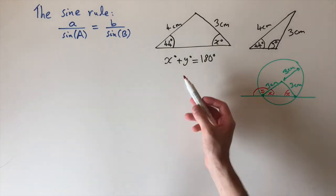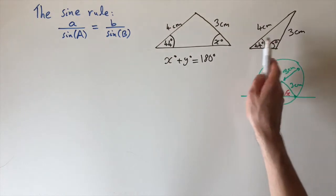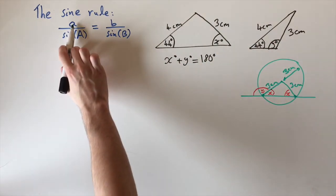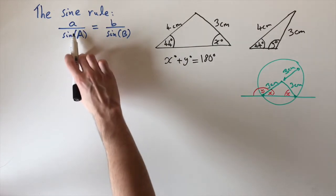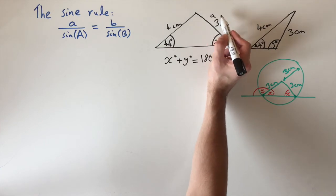So now we can solve this problem to get two different solutions. To find x, we just use the normal sine rule, and then to find y we use this relationship. Now remember, to use the sine rule we need to associate the lengths with the opposite angles. If we associate a to be 3 centimeters, so this side is a,